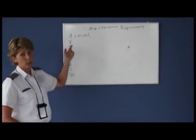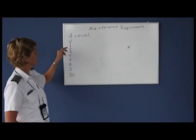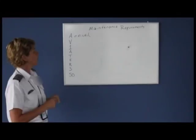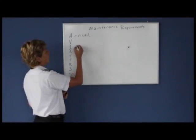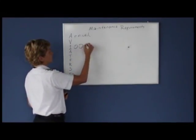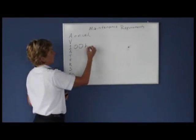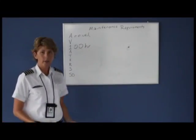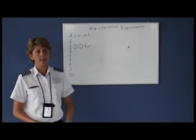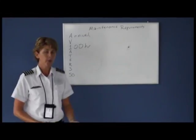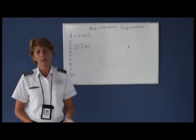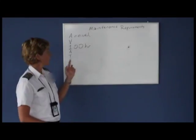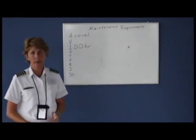Skipping the V for a moment, the I in our memory aid stands for the 100-hour inspection. This maintenance inspection is only required if the aircraft is for hire — if the aircraft makes money. So any type of commercial airplane or airplane used for flight instruction, banner towing, skydiving, or anything like that, the airplane would have to have a 100-hour inspection.